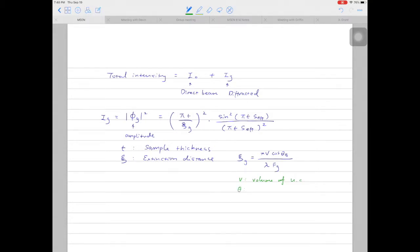Theta b is the Bragg's condition angle or Bragg's angle. Lambda is the wavelength of the electron beam. You know that if you know the acceleration voltage, and fg is called structure factor. We will discuss more about the structure factor in the future videos.